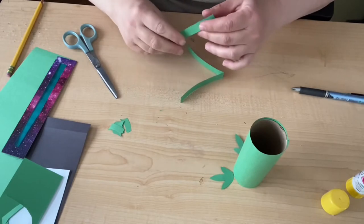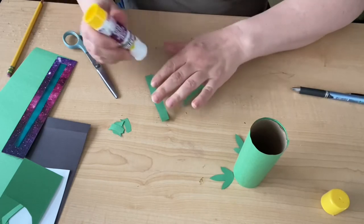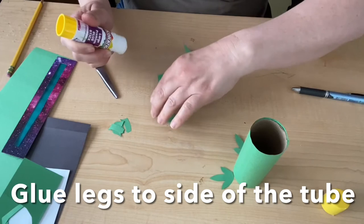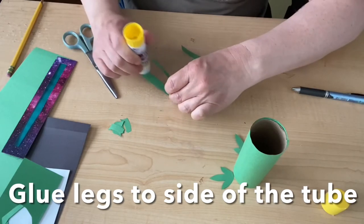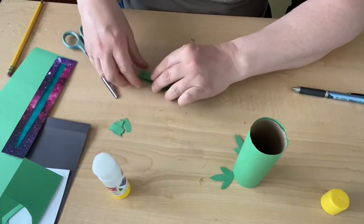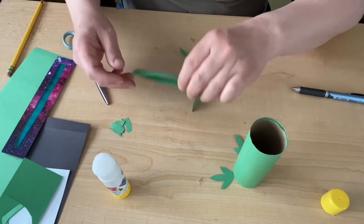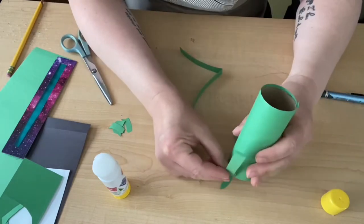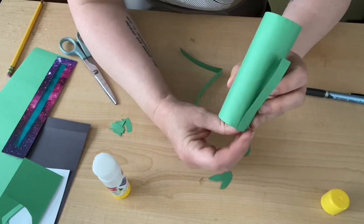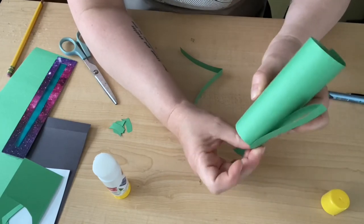Now we're going to glue our legs on. This part can be a little tricky. I'm going to put some glue outside and inside, kind of gluing the bottom of my frog legs together. Then I'm going to glue it to the side of its body. You can hold that for a minute to let it dry, and then we'll do the second one.